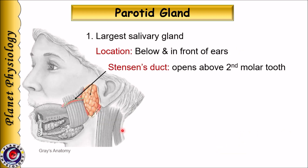Salivary glands are exocrine glands and pour their secretions into the oral cavity via ducts. The parotid gland is the largest salivary gland. It is located below and in front of the ear, and it opens into the oral cavity above the second molar tooth by means of the parotid duct, or duct of Stenson.